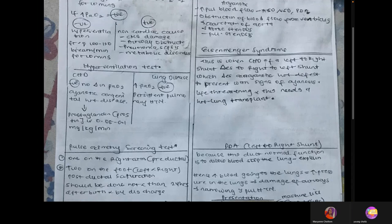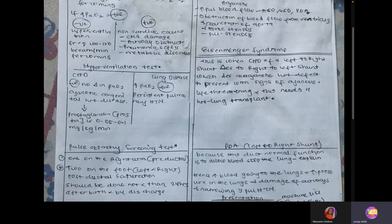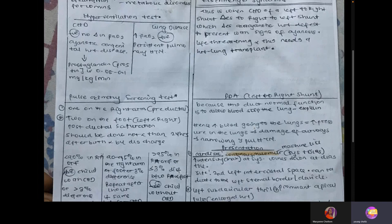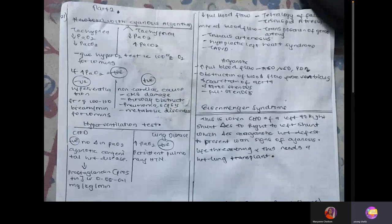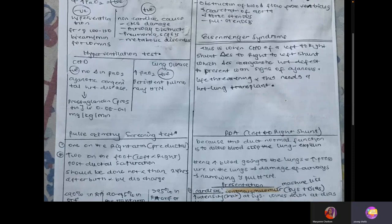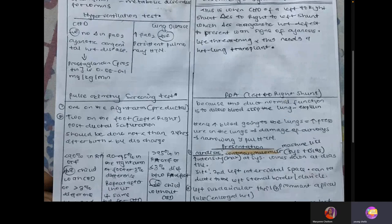Eisenmenger syndrome: most acyanotic congenital heart diseases cause a left-to-right shunt. However, as the disease progresses, this switches to a right-to-left shunt — that is Eisenmenger syndrome. A classic example is patent ductus arteriosus, which starts as a left-to-right shunt but over time causes pulmonary hypertension, reversing to a right-to-left shunt. This is very deadly; treatment requires emergent heart and lung transplant, otherwise there is a 100% fatality rate.